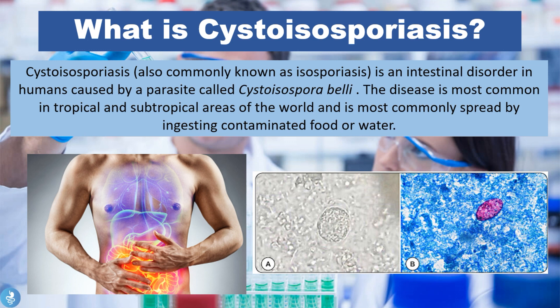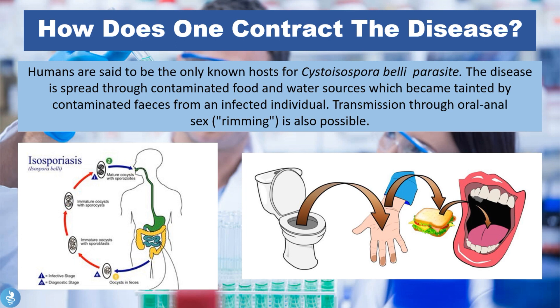Now that we know the basics of the disease, let's take a closer look at how one can contract it. Humans are said to be the only known hosts of the Cystoisospora belli parasite. The disease is spread through contaminated food and water sources, which become tainted by contaminated feces from an infected individual. Transmission through oral-anal sex is also possible.